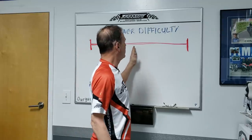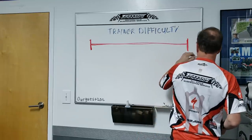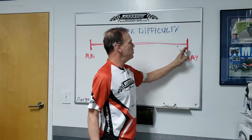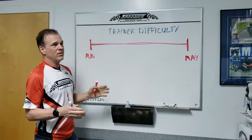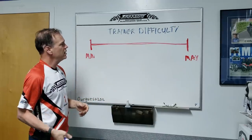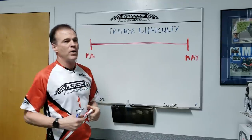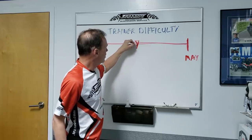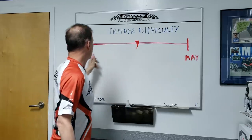At first glance, it would be easy to believe that moving the trainer difficulty towards the max side or the min side would make the game harder to play or easier to play. And this is where all the language gets extremely confusing. There is some truth depending on your bicycle. By default, the game comes set in the middle and you can open your settings and slide this either way.